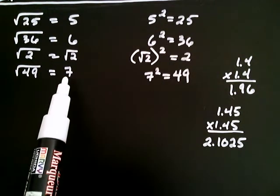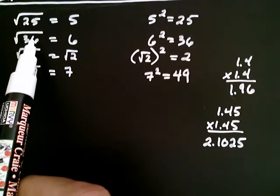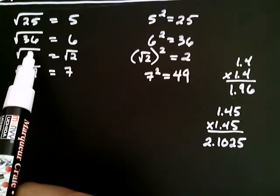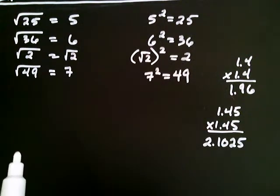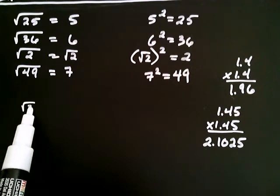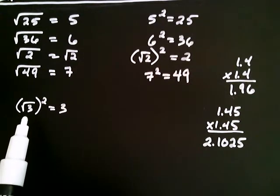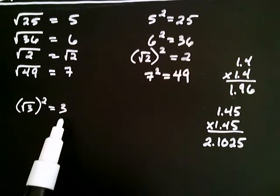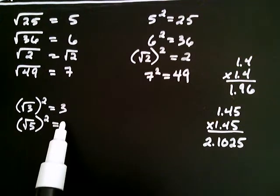Let me go over that again, because that's a little subtle. Seven squared gives 49. Five squared gives 25. Six squared gives 36 — what's under the radical. The square root of two squared gives what's under the radical, which is two. That's a very important observation, and it means that things like this are also true: the square root of three squared is equal to three. And likewise, if you take the square root of five and square it, you're going to get five.